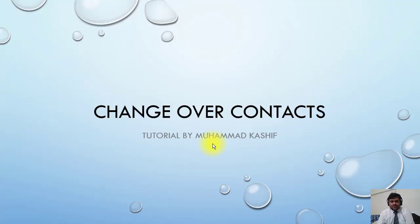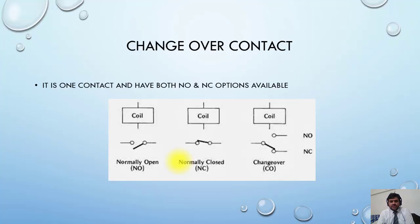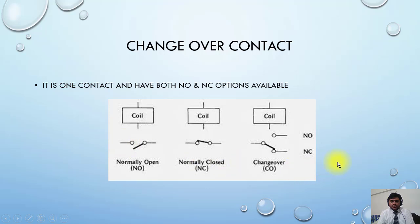There is one more type of contact which is called a changeover contact. In this diagram, you can see this is the normally open contact, this is the normally closed contact, and this is the position moving from NC to NO when the coil operates. This is the example of a changeover contact — you will find this contact also in the drawing.